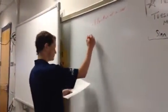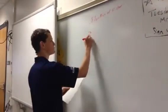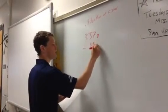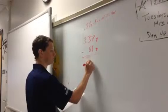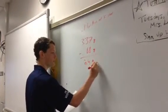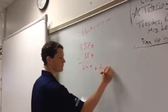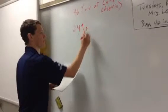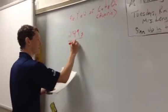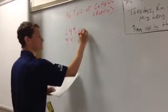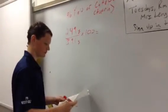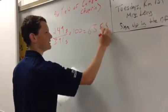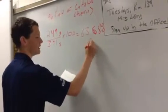The mass of the filter and aspirin was 3.37 grams. Subtracting the 0.88 grams of the filter gives 2.49 grams of aspirin. The actual yield was 2.49 grams over the theoretical yield of 3.91 grams, times 100, equals 63.68% yield of aspirin.